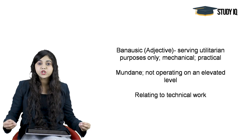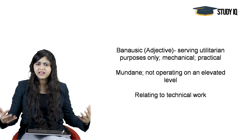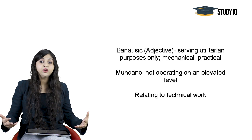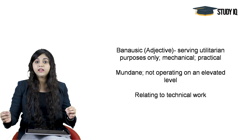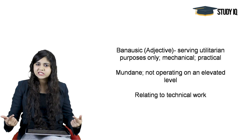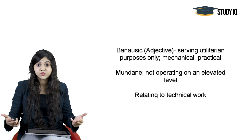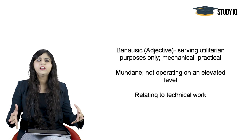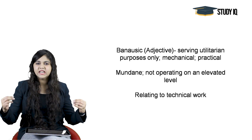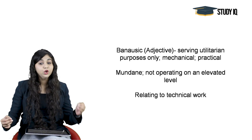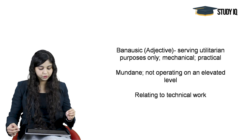Moving on to the next word: Benosic. Benosic shabd ka arth hota hai technical work karna, mechanical work karna, kisi kariya ko karna kyunki uska utilitarian purpose hai. Utilitarian purpose — yaani aap us kariya ko isliye kar rahe hain kyunki ya toh aapko koi dhan raashi mil rahi hai uske liye, ya woh aapka routine ka kaam hai. Toh aise kisi kariya, routine work, mundane work ko describe karte waqt hum benosic shabd ka prayog karte hain.